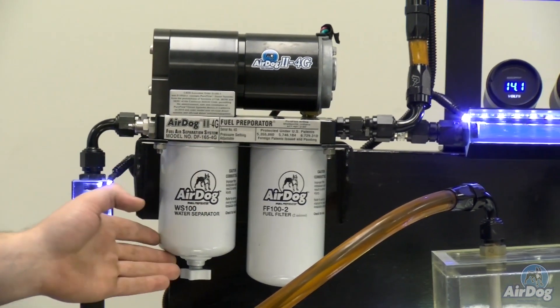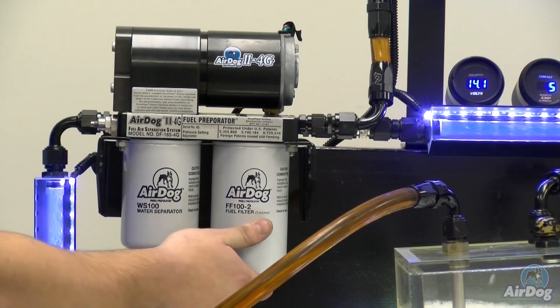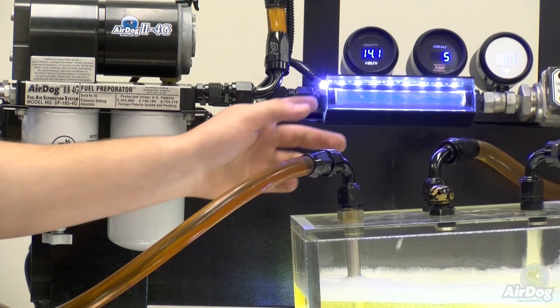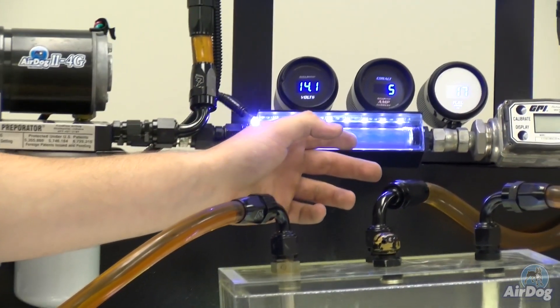On the suction side we take all the water out and on the pressure side we take all the air out and send it back to the tank for our low pressure return. You can already see that fuel already starting to clear up.